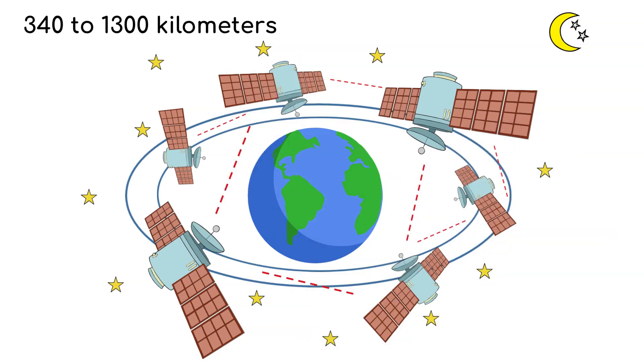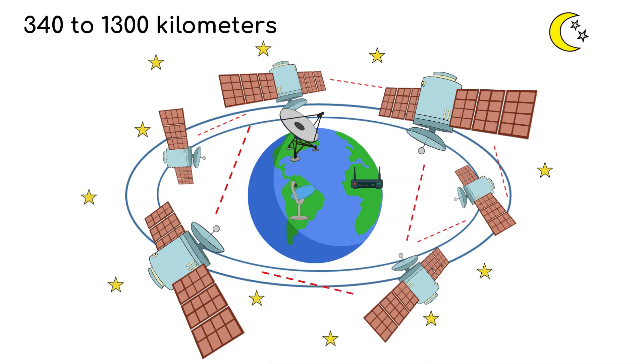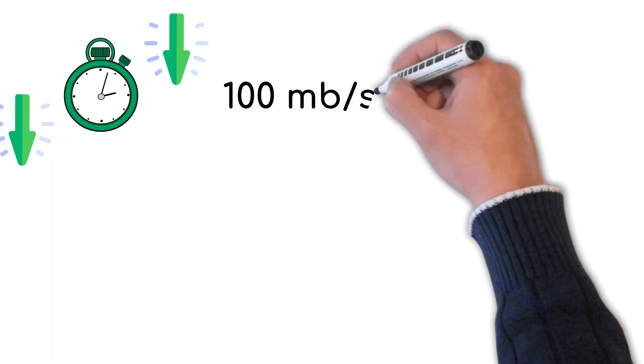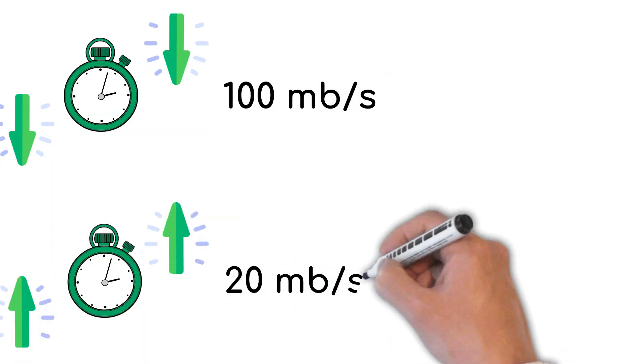The satellites then send their data via radio link to terminals on Earth to us humans. This means that speeds of at least 100 Mbit per second downstream and 20 Mbit per second upstream can be achieved with a maximum latency of 31 milliseconds.